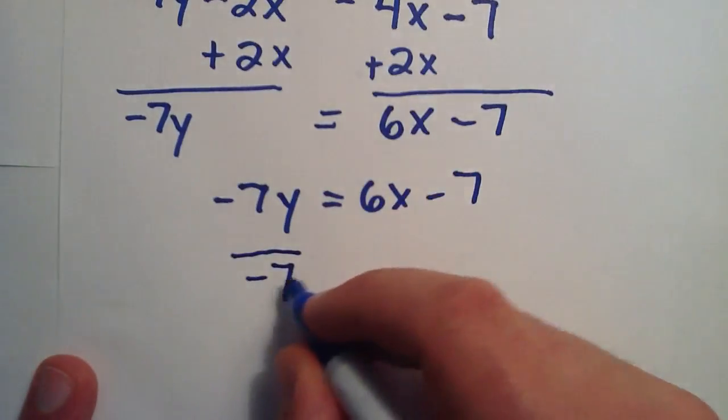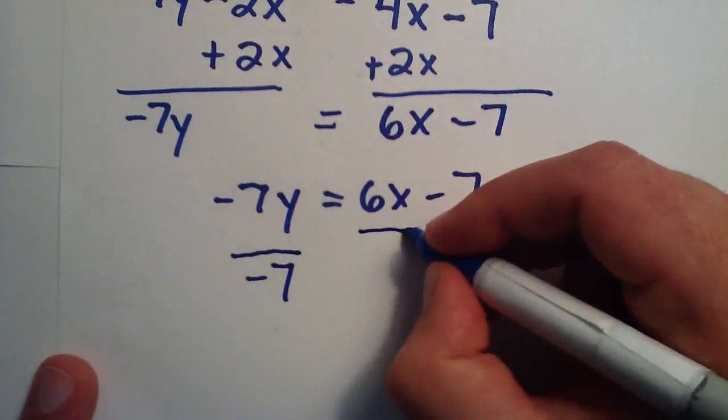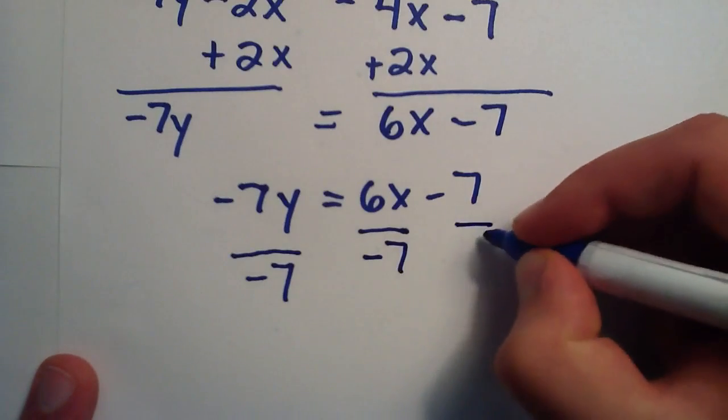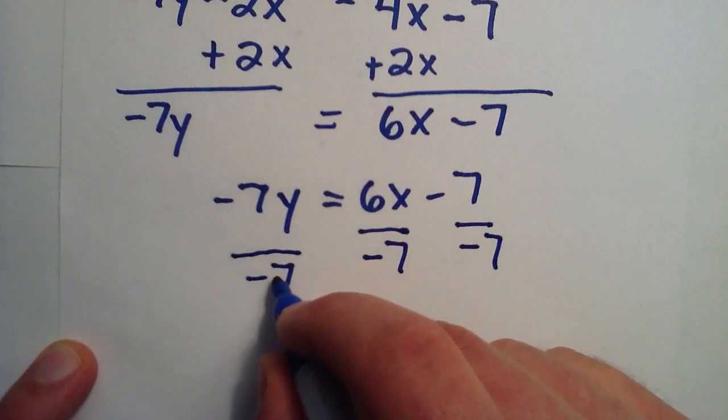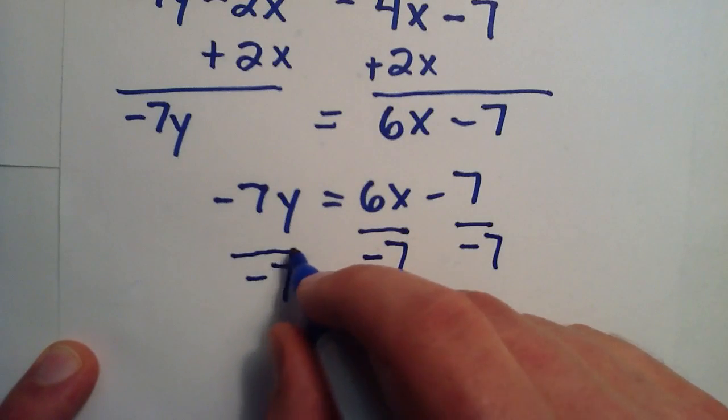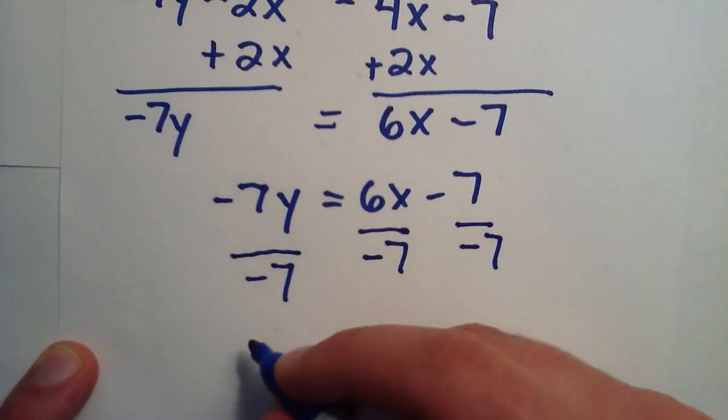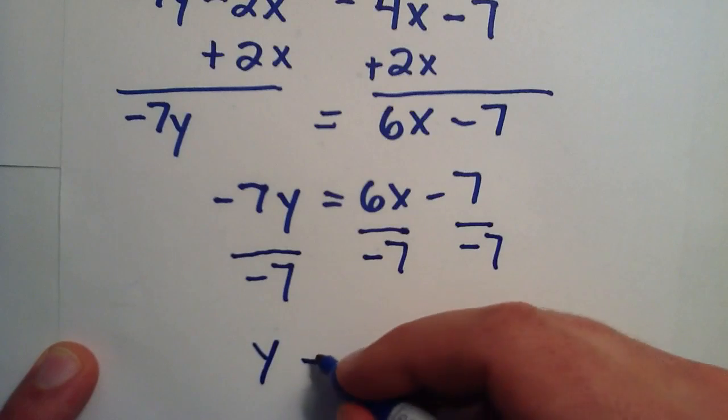So the way to do that is we need to divide this by negative seven. And what we do to one side we have to do to the other. So we divide each of these terms by a negative seven as well. Now a negative seven divided by a negative seven is simply just one. And one times y is simply y. So we'll just go ahead and rewrite y equals here.